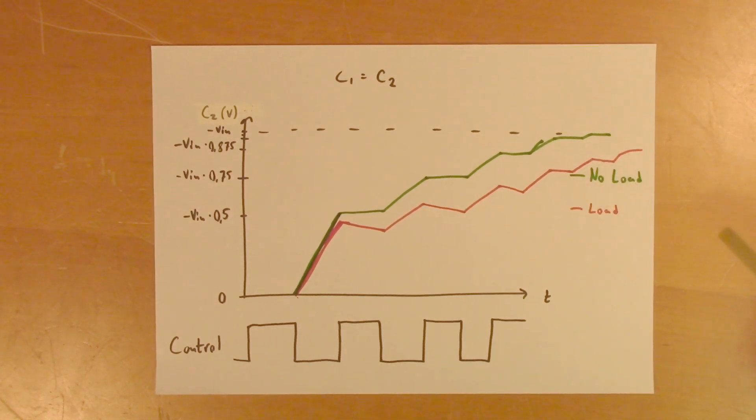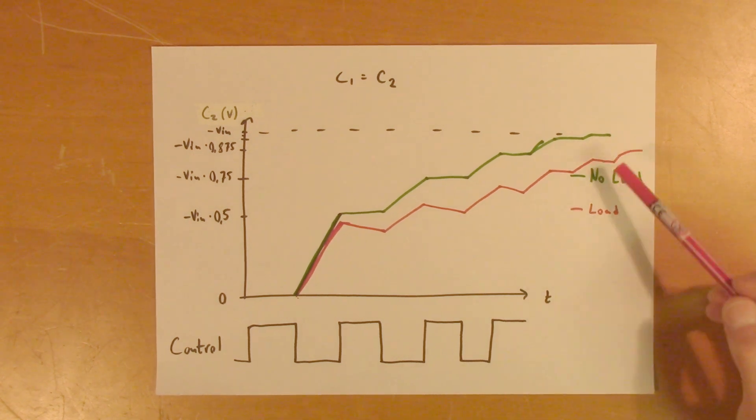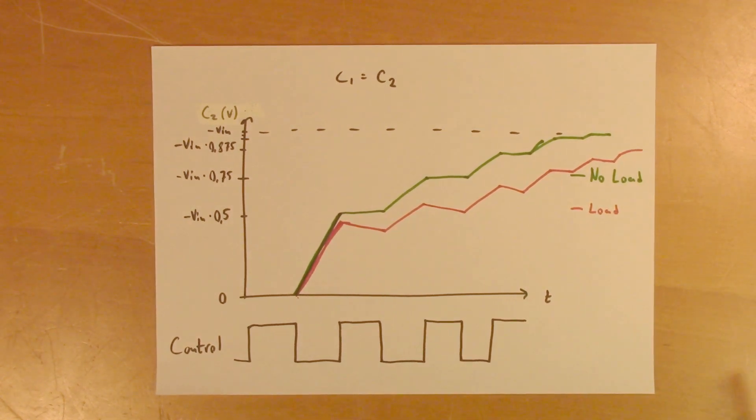And the ripple depends on how big C2 is. And it depends on how much current you draw from the circuit. So charge pumps are often good fits for low current applications, because then you won't have that much ripple.